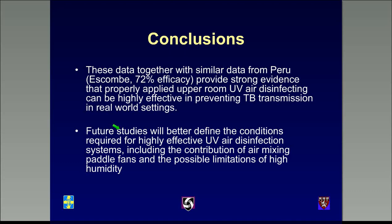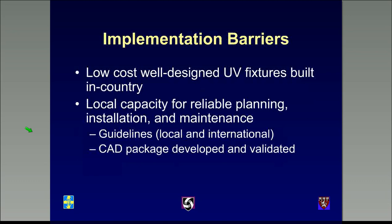These conclusions, together with similar data from Rod Escom who did a similar study in Peru and found 72% efficacy, provide strong evidence that properly applied upper room UV can be highly effective in preventing TB transmission in real-world settings. Future studies will better define the conditions required for highly effective UV. Real barriers to using this include the availability of low-cost, well-designed UV fixtures built in-country and local capacity for reliable planning, installation, and maintenance — there are many poorly designed fixtures and a lack of understanding of how these systems work.